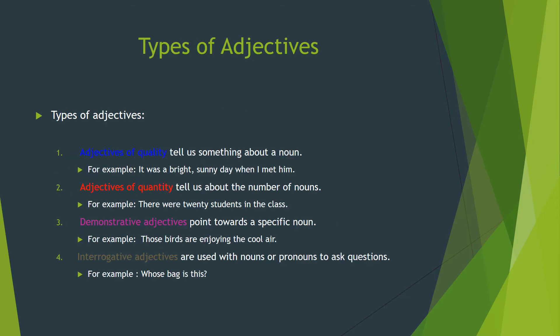There are some types of adjectives. Here we are going to discuss the four major types. The first one is adjectives of quality. As the name shows, an adjective of quality tells us something about a noun — how a noun looks or feels. For example, 'It was a bright, sunny day when I met him.' 'Day' is the noun, and 'sunny' and 'bright' are its adjectives of quality.